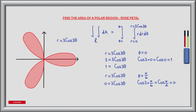We know that one half of one petal is completed when r is equal to 0. Substituting 0 for r we have 0 equals 3 cos 3 theta. Using theta equal to pi over 6 radians, cos of 3 times pi over 6 equals cos of pi over 2, which gives us 0 and therefore satisfies that equation. So one half of one petal lies between the angles theta equals 0 and theta equals pi divided by 6.